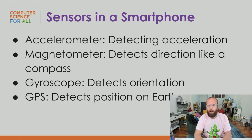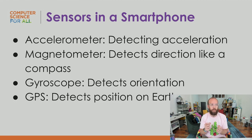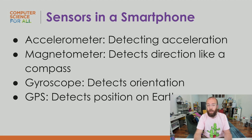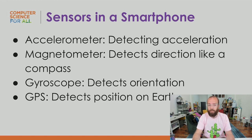A good way to get a reference point for sensors is using smartphones, since most kids have used one. In a phone, you have accelerometers for detecting motion — like what direction it's moving when you play games — typically measured on an XYZ plane. Magnetometers detect direction like a digital compass, telling you if you're facing magnetic north. Gyroscopes detect orientation — whether the phone is facing up, down, or sideways. And GPS detects your position relative to Earth.